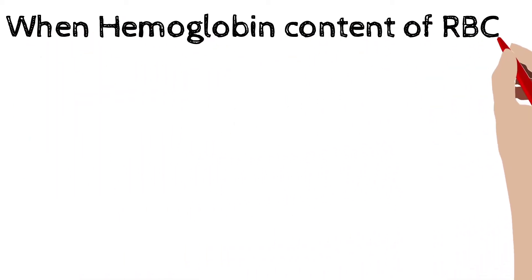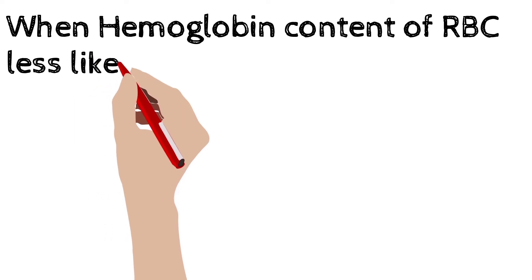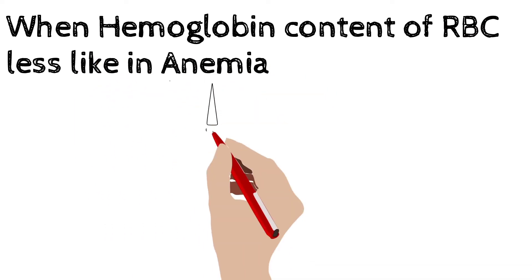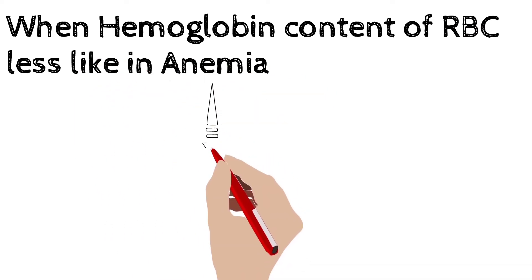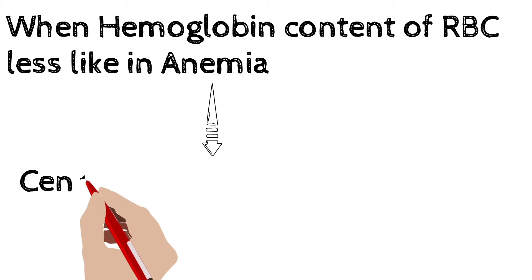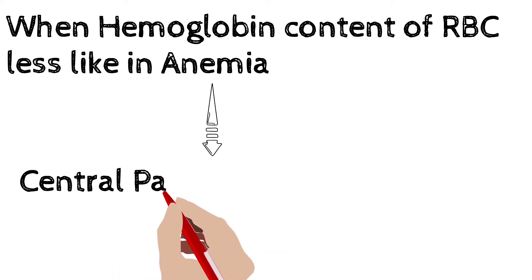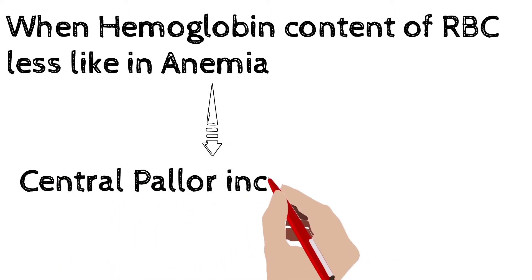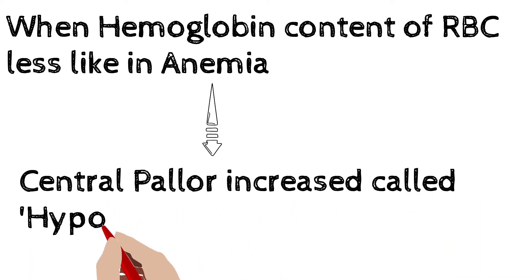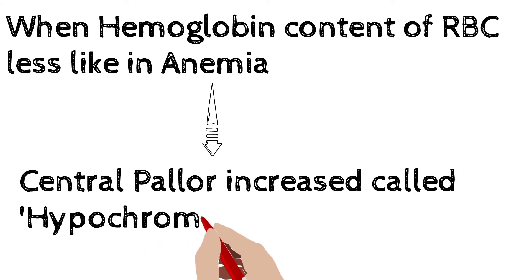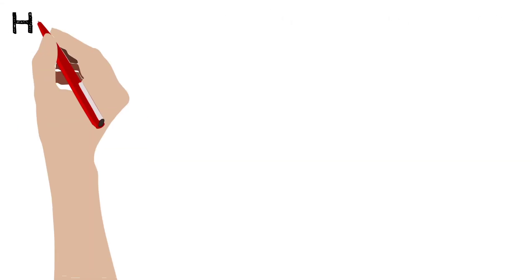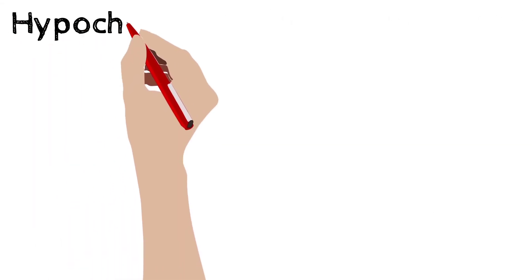When the hemoglobin content of a red blood cell is less, especially in anemia, the central one-third pallor of the red blood cell will be increased, and such an RBC is given the name hypochromic red blood cell.